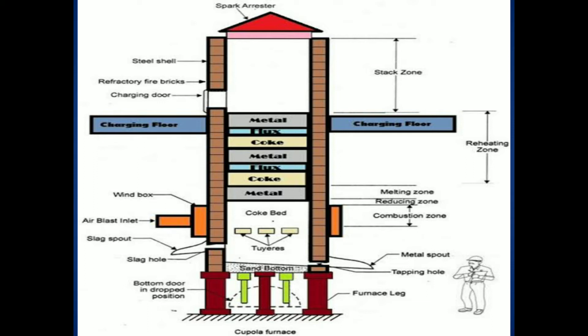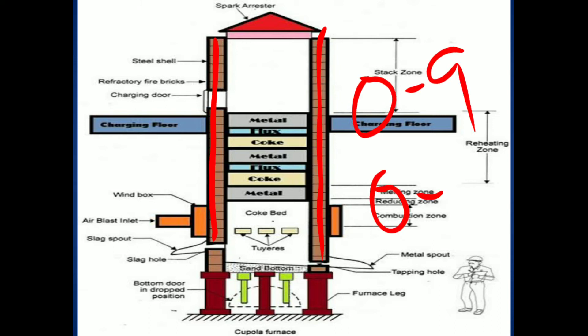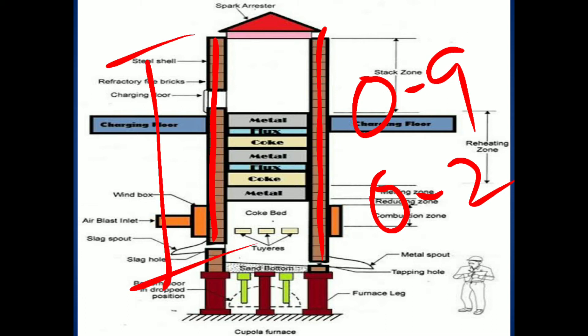The cupola furnace is similar to a blast furnace but with some size variations. It consists of a cylindrical steel shell lined with fire bricks. The diameter of a cupola generally ranges from 0.9 to 1.2 meters, and the height is approximately four times the diameter, meaning about four to eight meters in height.